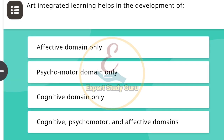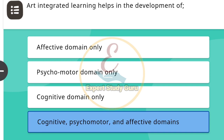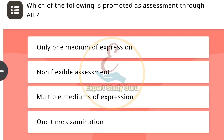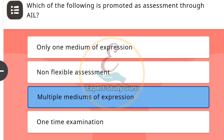Art integrated learning helps in the development of — the correct answer is cognitive, psychomotor, and affective domains. Next: Which of the following is promoted as assessment through AIL? The correct answer is multiple mediums of expression.